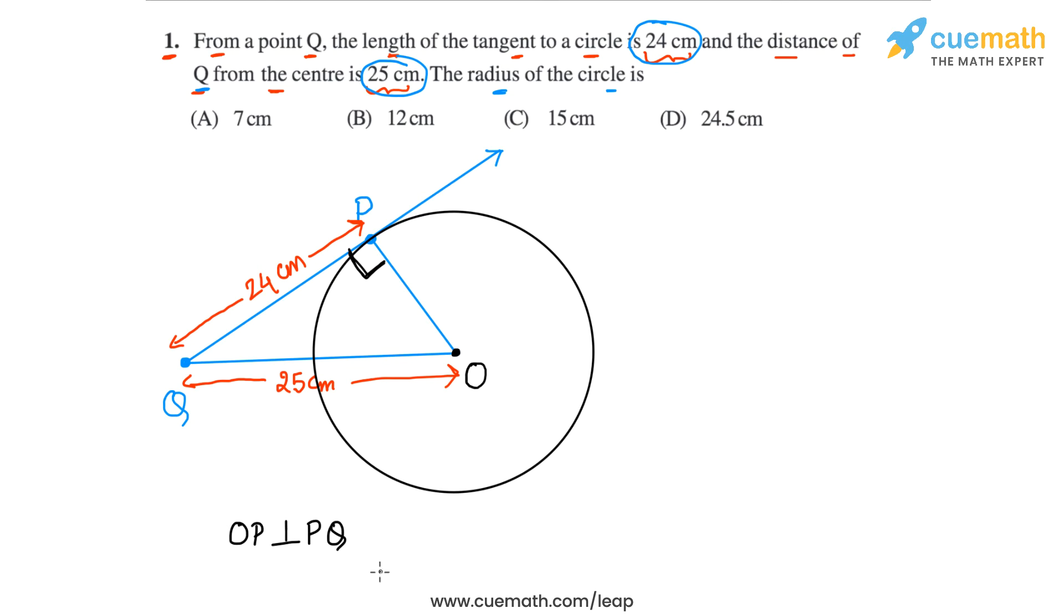So OP will be perpendicular to PQ, and this enables us to find the radius which is OP very easily by applying the Pythagoras theorem. The Pythagoras theorem to triangle OPQ. So OPQ is this triangle, right angled triangle in the figure.